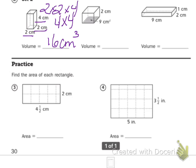Now you have base times height. So 9 times 2 equals 18 centimeters cubed. Do the last one. Again, you have length, width, and height.